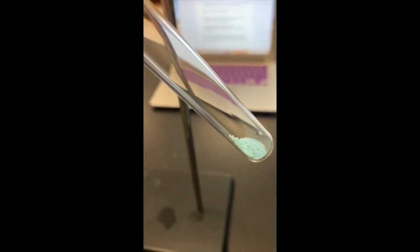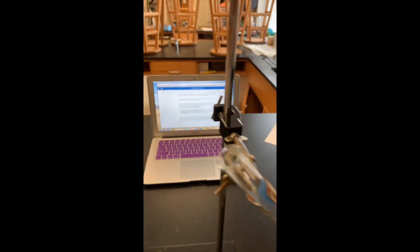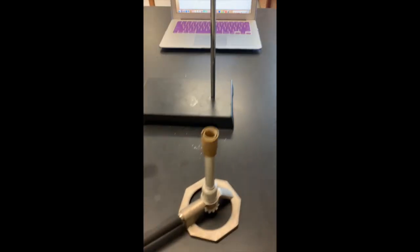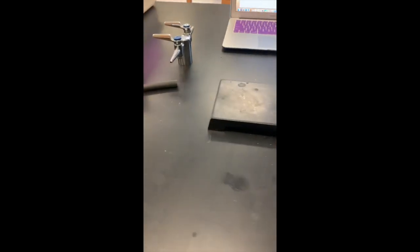I've added the copper sulfate to a test tube. This test tube is being held in a test tube clamp on a ring stand. This is all part of the setup for the Bunsen burner.